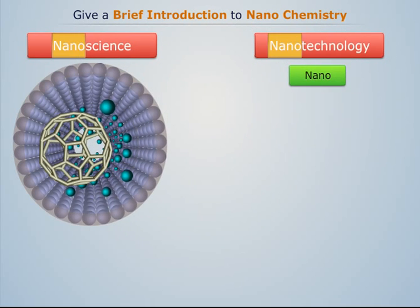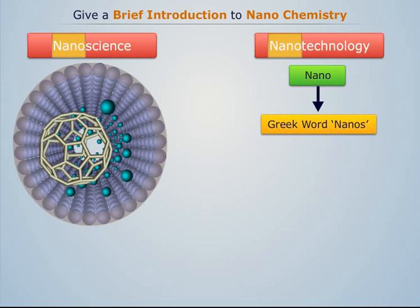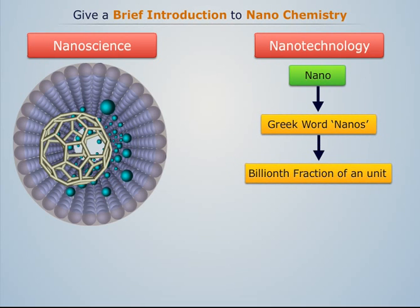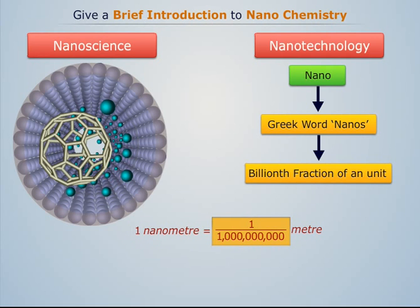The word nano has been derived from the Greek word nanos, which is a designation used to represent a billionth fraction of a unit. For instance, one nanometer equals one thousand millionth of a meter.